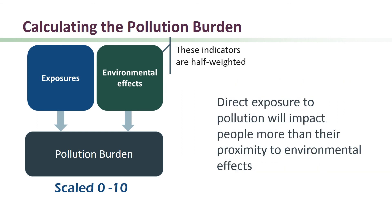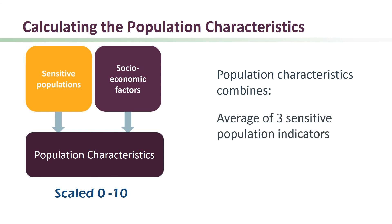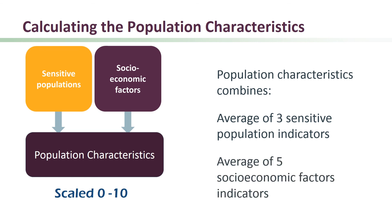This is because direct exposure to pollution, like breathing in contaminated air, is likely to contribute more to a person's total pollution burden than the impact of living near facilities or contaminated land or water. For simplicity, the average of the pollution burden percentiles is divided by 10 to put it on a 0 to 10 scale. The population characteristics score is calculated by combining the average of the three sensitive populations indicators and the average of the five socioeconomic factors indicators. Here, all the population characteristics indicators are weighted equally, and dividing by 10 produces scores ranging from 0 to 10.